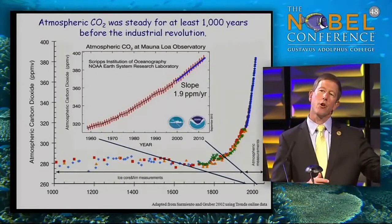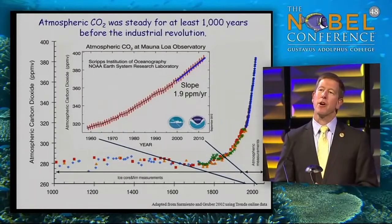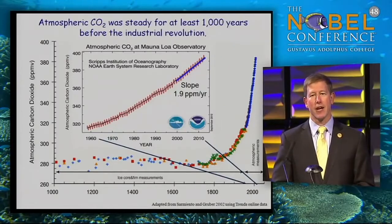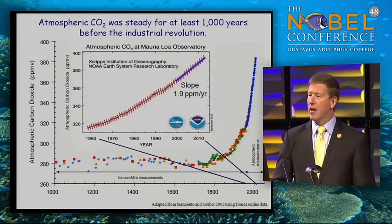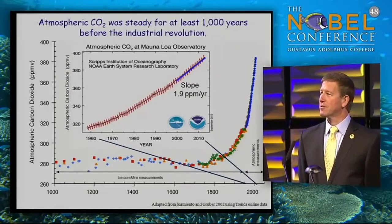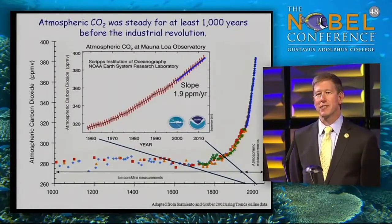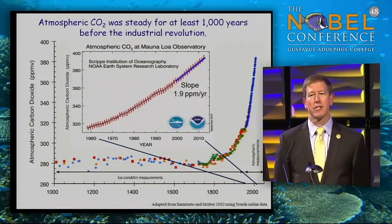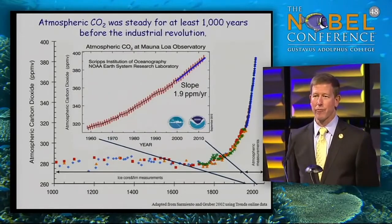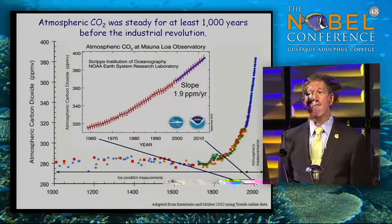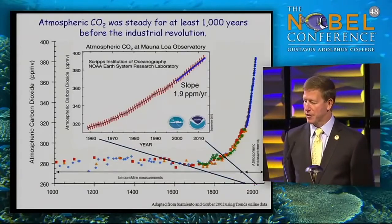We believe you can go back as far as perhaps 50 million years and not see CO2 higher than it is today. Yet since the beginning of the Industrial Revolution, we've been burning fossil fuels and releasing CO2 into the atmosphere, which has resulted in an exponential growth in atmospheric CO2 — and we know that very well from our direct measurements.